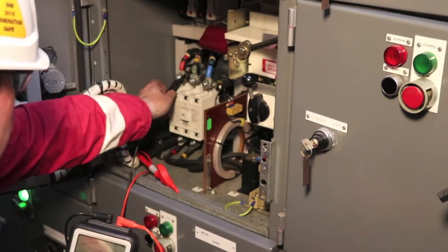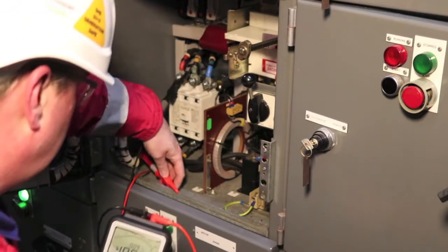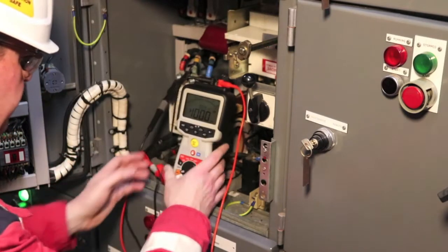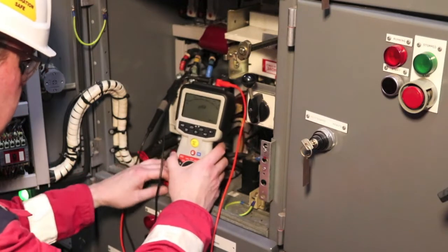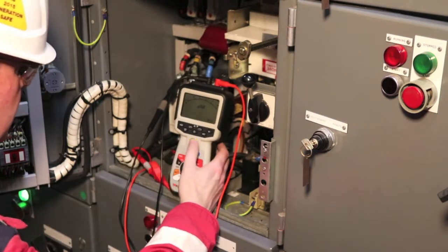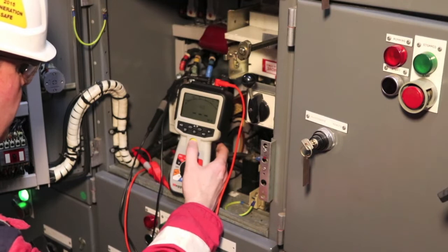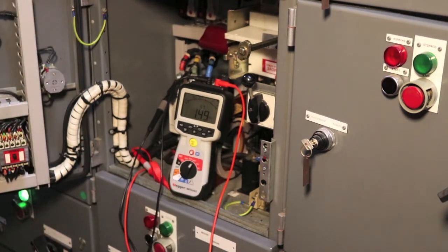So now set up for the first insulation test which will be dielectric absorption ratio test and turn it around to 500 volts. It's already saved from the last test on the dial setting so we'll just hit the test button and we'll leave it to record for the next one minute.